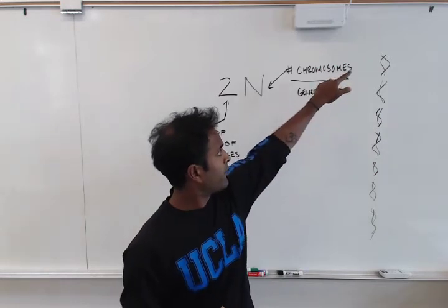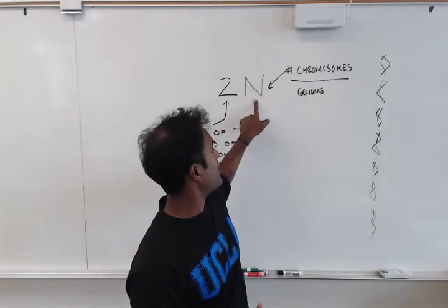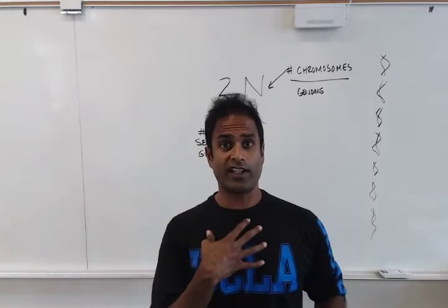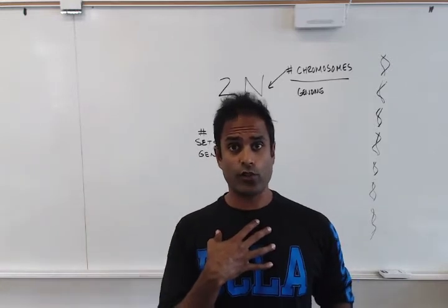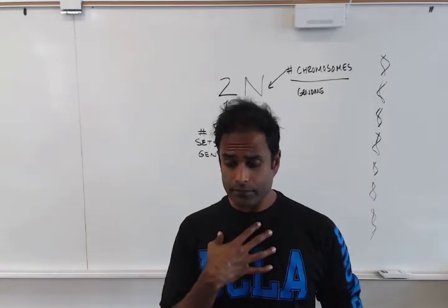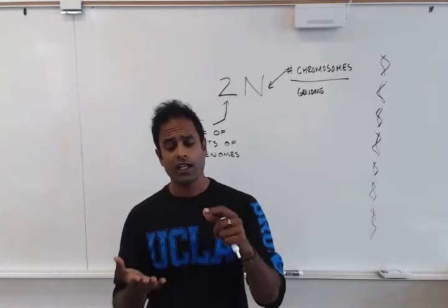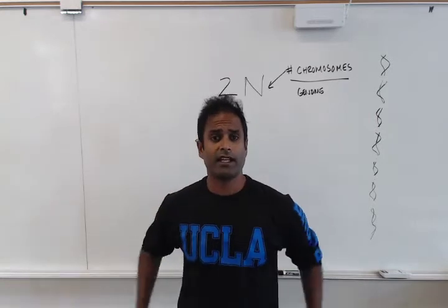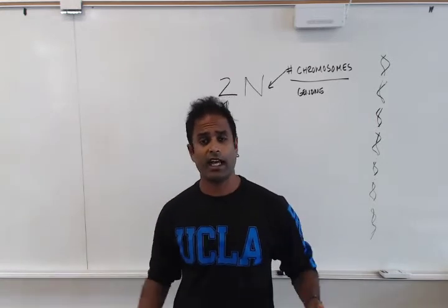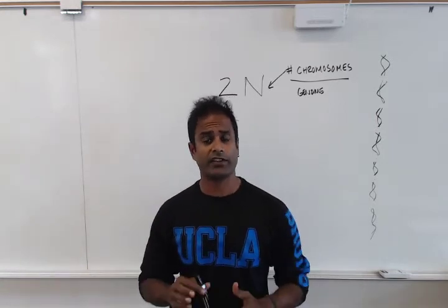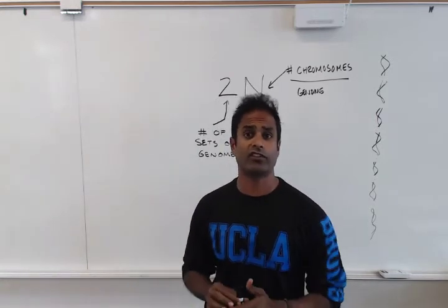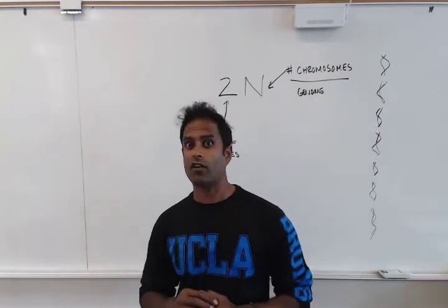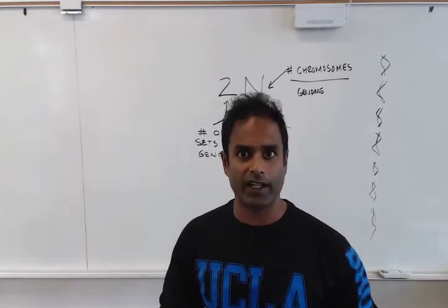For humans, the N number is 23. Most of our cells are 2N, which means my hand cells, my brain cells, my legs — almost everything has two genomes in it. There are a few exceptions, as there always are in biology.